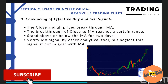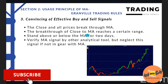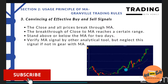You can see here there is a yellow line. So how we can know the signal, whether the buy or sell signal is effective - you can see the close and all price break through the MA, and it's above the MA line, which means it's an effective one. The second criterion is the breakthrough of close to MA reaches a certain range.